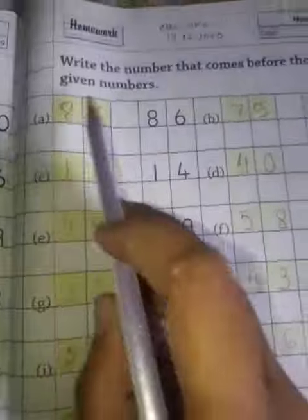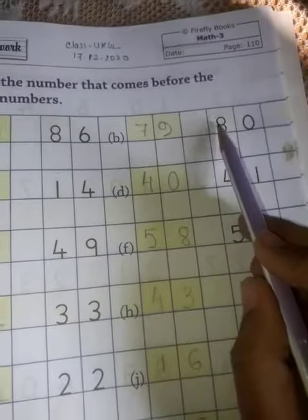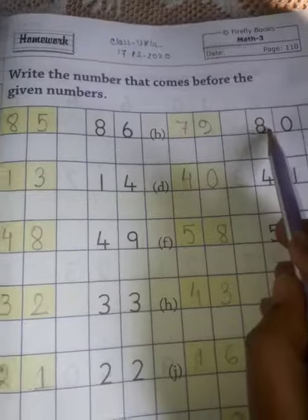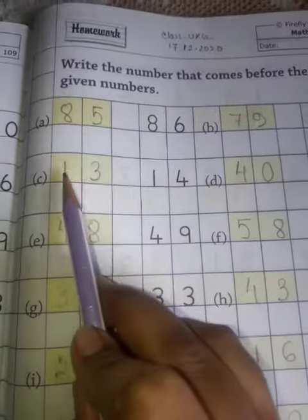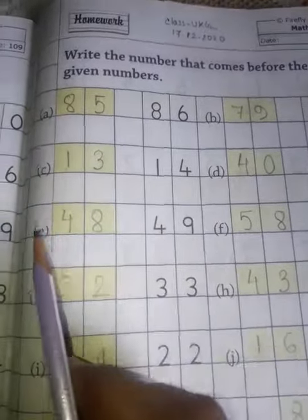So, 86, the answer is 85. 85, 86. 80: 79. 79, 80. 14: 13. 13, 14. 41: 40. 40, 41. 49: